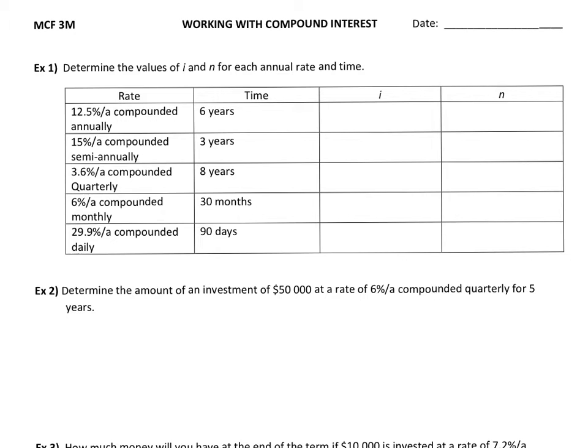Remember, I is the interest rate per compounding period and N is the total number of times it will compound.